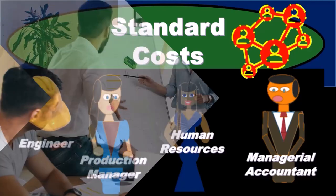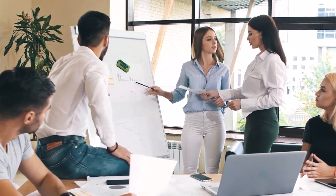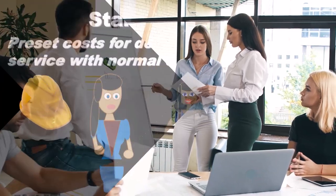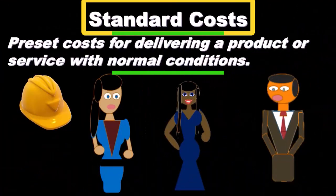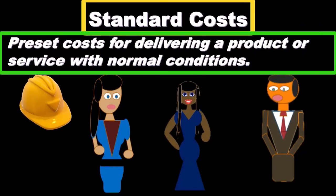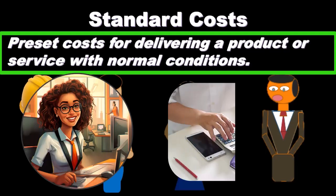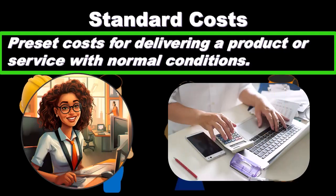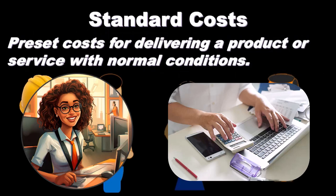In this presentation, we will take a look at standard costs. Standard costs are preset costs for delivering a product or service under normal conditions. They're going to be the preset cost — the cost that we are, in essence, budgeting or planning, what we would expect to happen under normal conditions. It's going to be an estimate into the future, so we're projecting or estimating what the standard cost of some components should be.